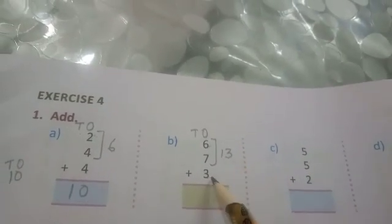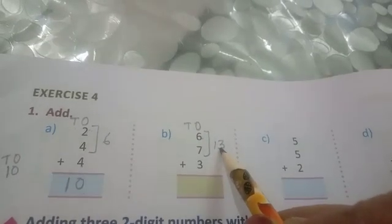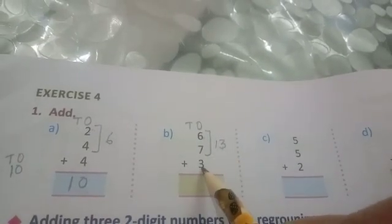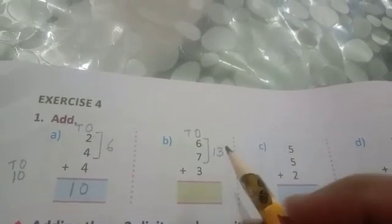Now we will add 13 and 3. Children, keep 13 in your mind and count 3 on your fingers. With the help of forward counting, 13 plus 3 is 16.